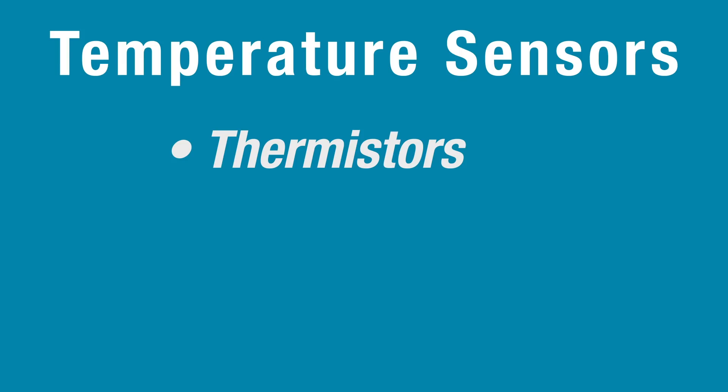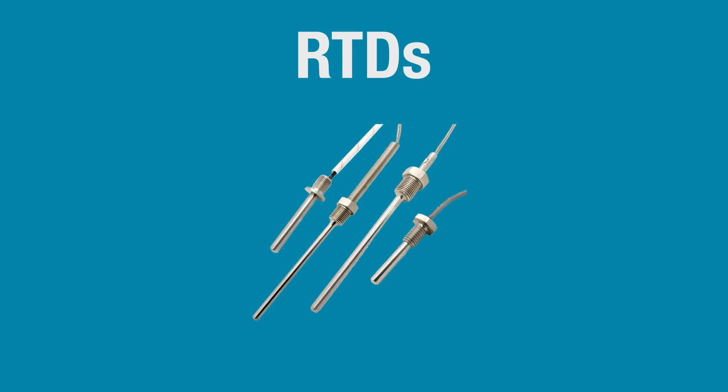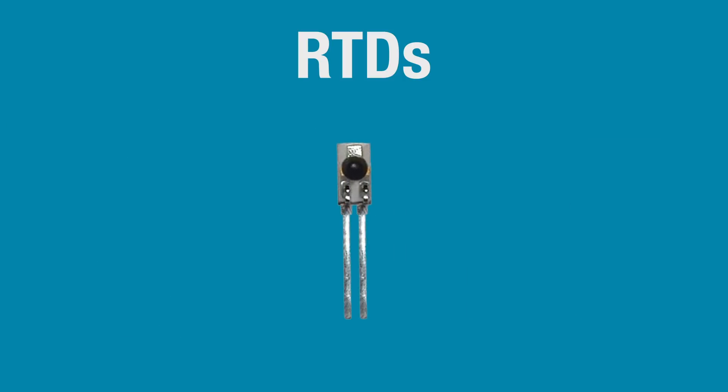Thermistors are only one type of temperature sensor. There are also resistance temperature detectors, or RTDs, thermocouples, and other temperature sensing chips. Thermocouples and RTDs are very similar to thermistors, except they are made of pure metals. Rather than changing resistance, their two dissimilar metals produce a temperature-dependent voltage, which can be used to determine temperature.